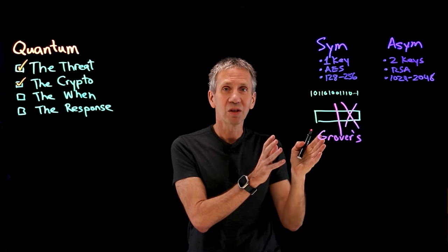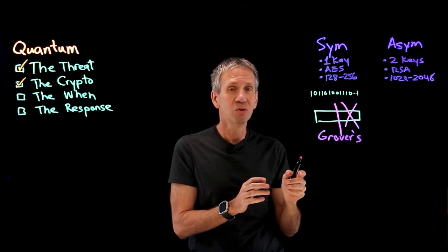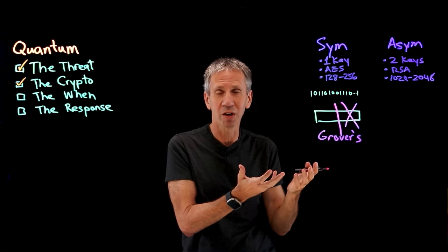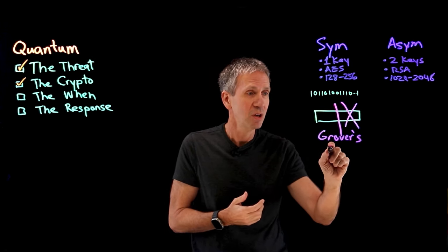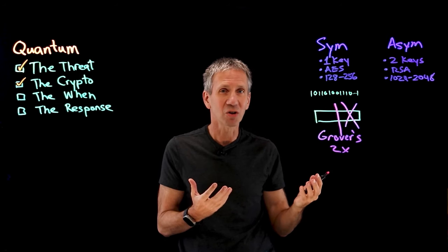Grover's weakens symmetric algorithms by half. Now the good news is if we want to go ahead and overcome the cracking capabilities of the quantum computer, all I have to do is just make the key twice as long. So that's not such a hard problem to solve.